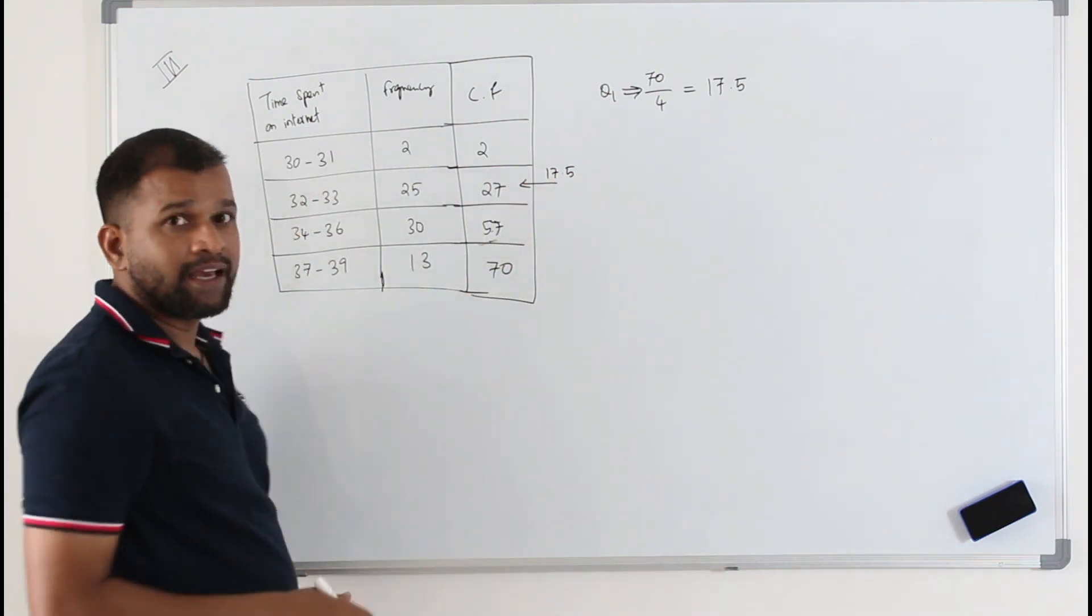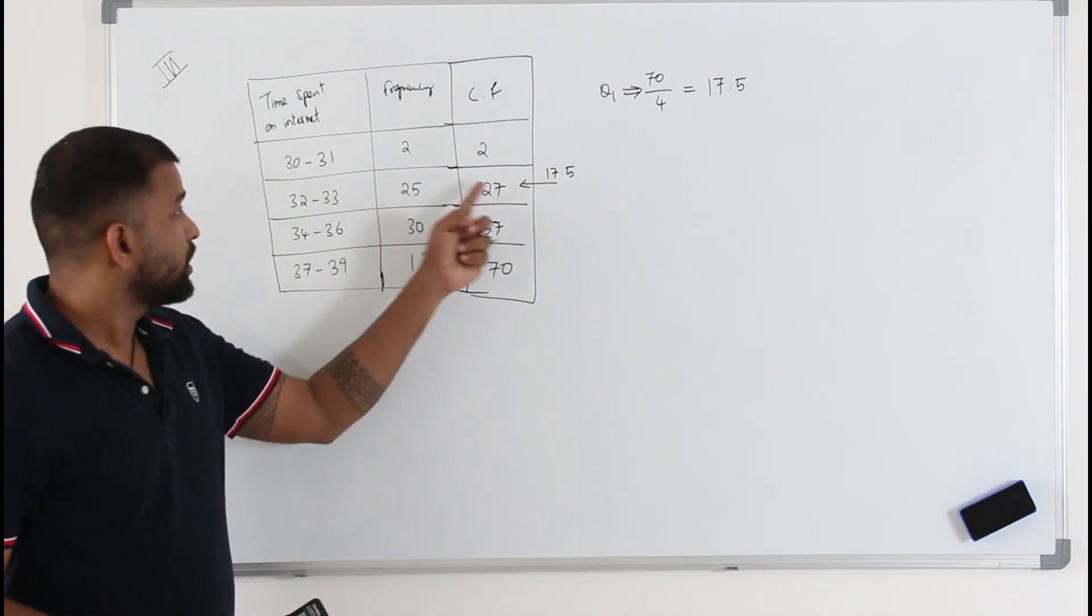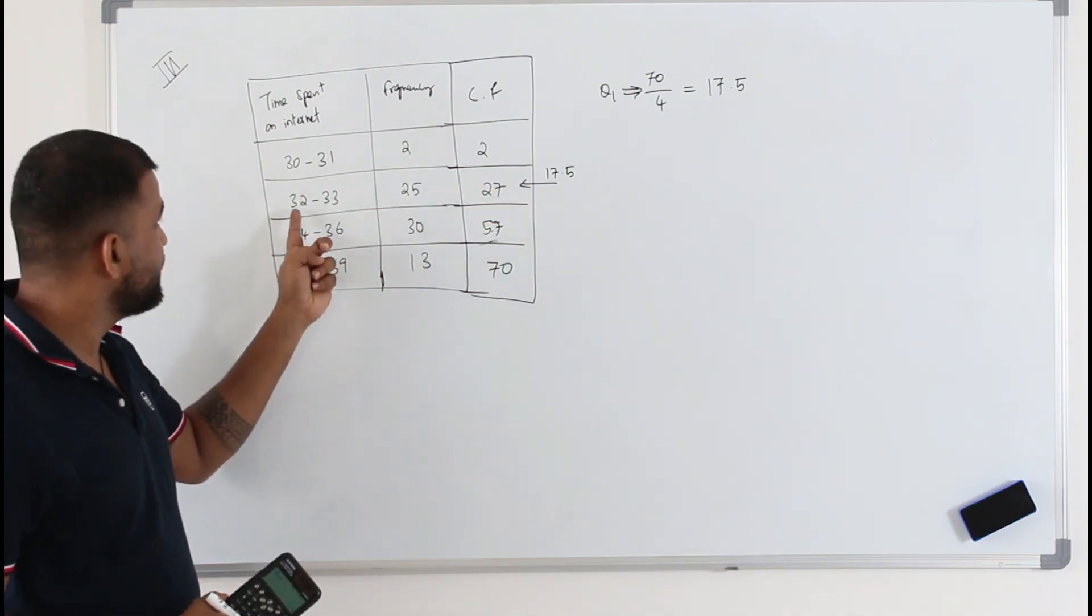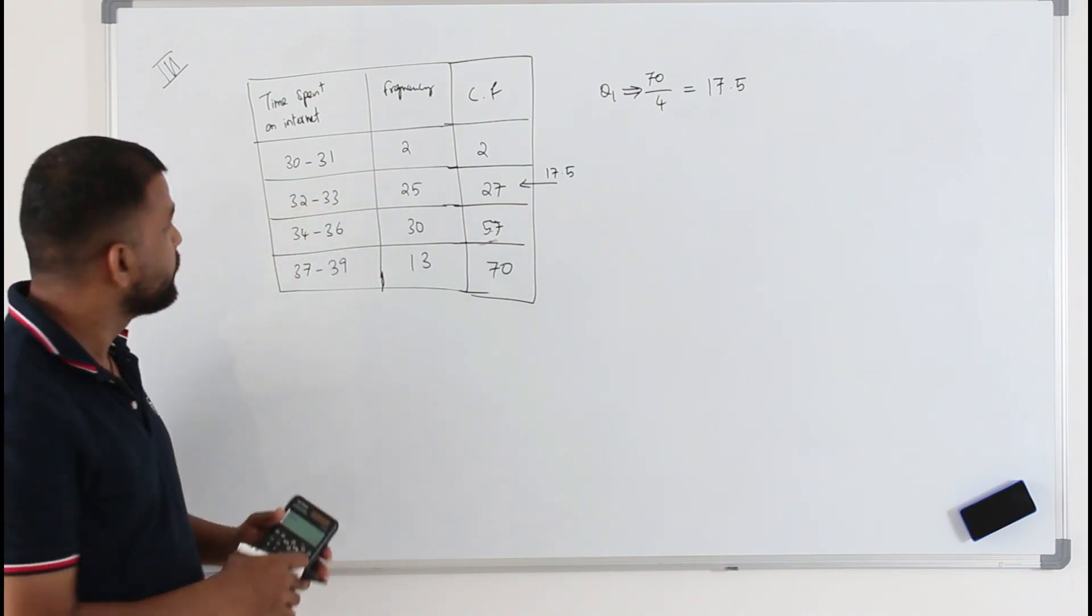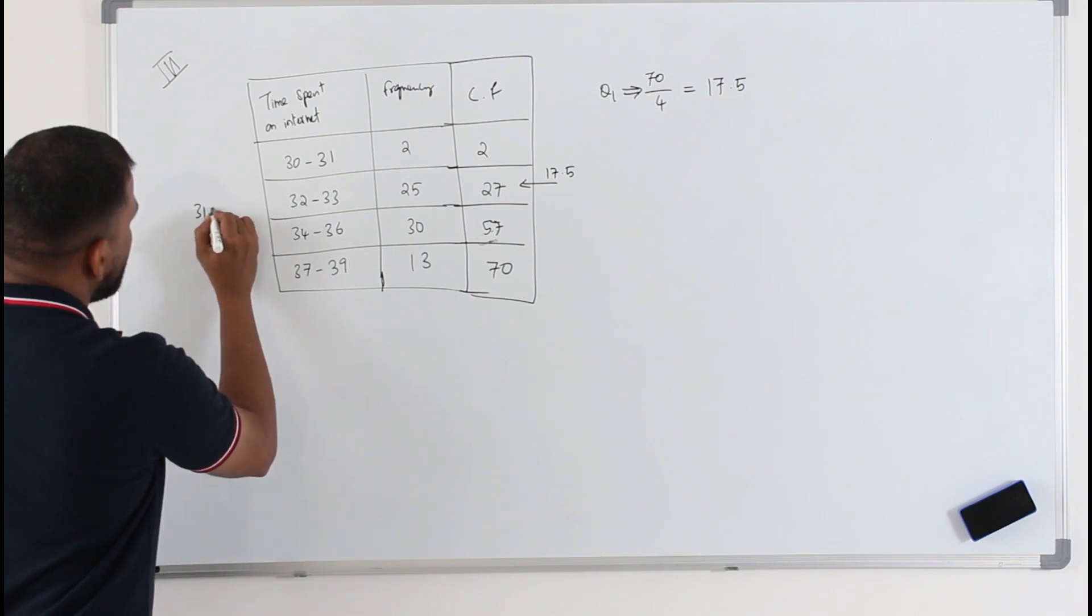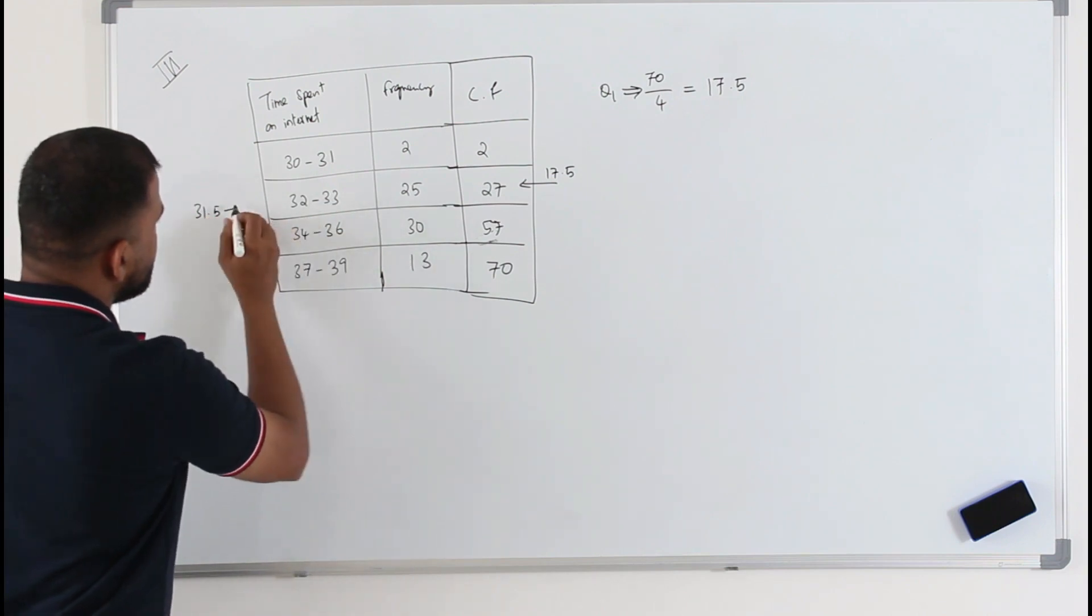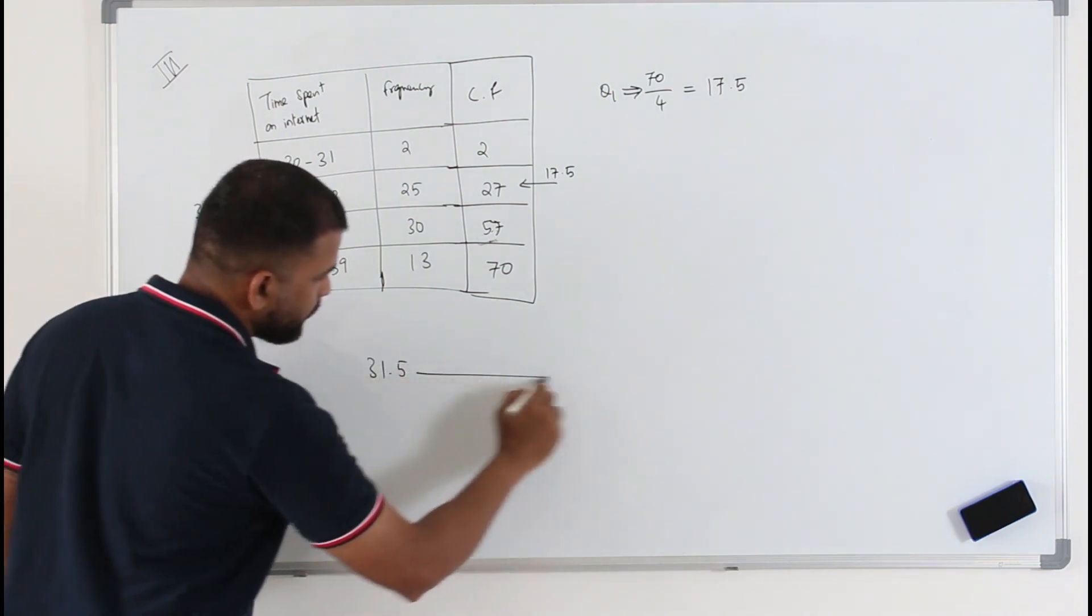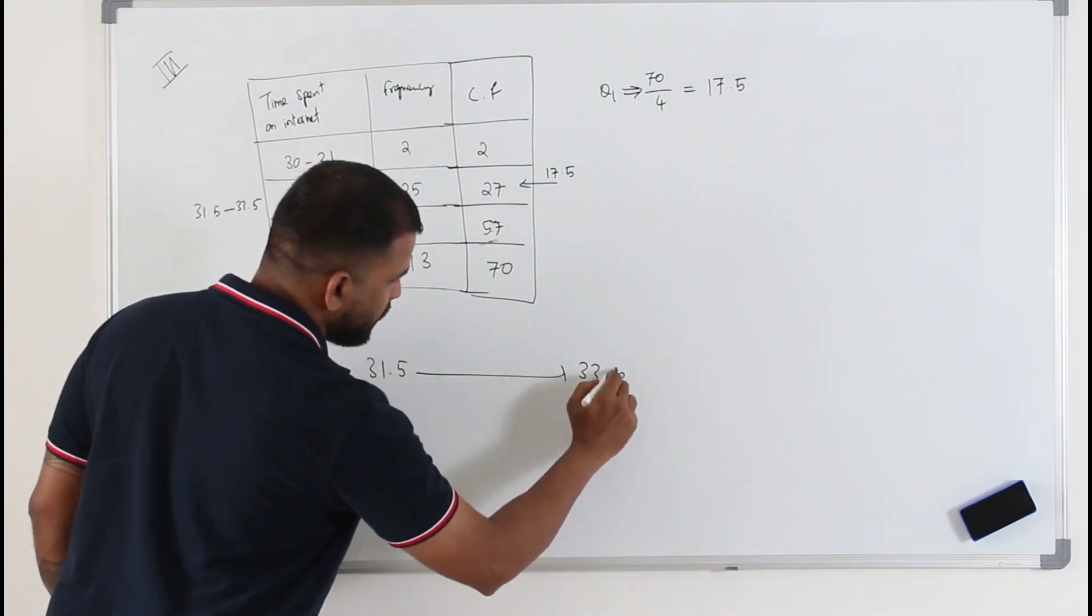You need to take the class boundaries of the corresponding class interval. You don't take 32, 33 - that's wrong. The class boundaries here are the average of these two: 31.5 and 33.5. So you take 31.5 and 33.5.